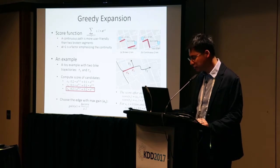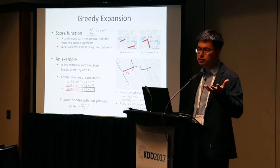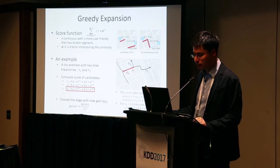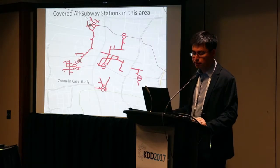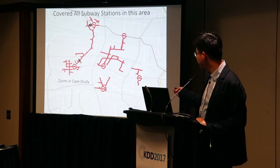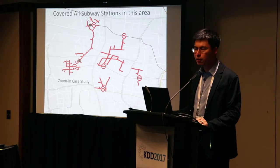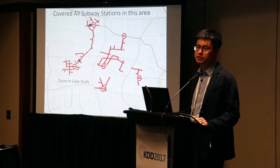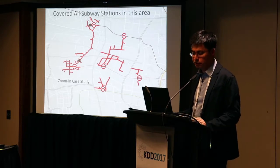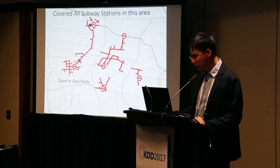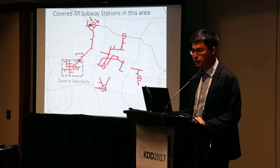Based on the greedy expansion, we can find the best or near-optimal solution for bike lane planning. The results obtained in Shanghai show that without considering subway station locations, our algorithm naturally finds that bike lanes start from subway stations — validating the approach. In one example, there is a subway station, a shopping mall, and residential areas nearby.